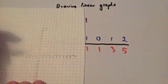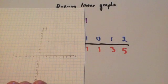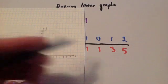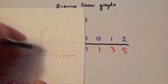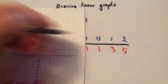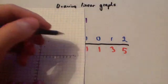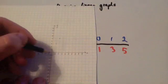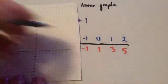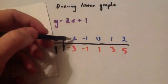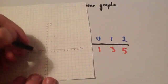I use little x's when I plot my points — you can do little dots, but if you do them too finely the examiner won't be able to see you've actually put the dot down. So I like little x's. 1 across, 3 up. 0 across, 1 up. 1 to the left, minus 1. And the coordinate minus 2, minus 3.